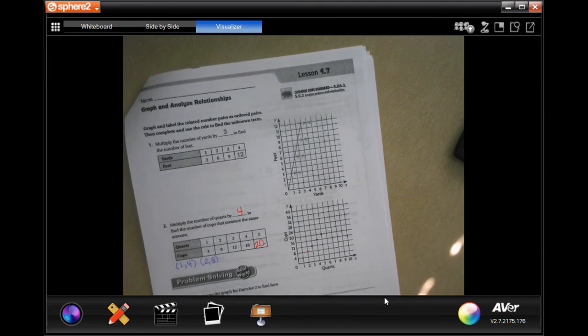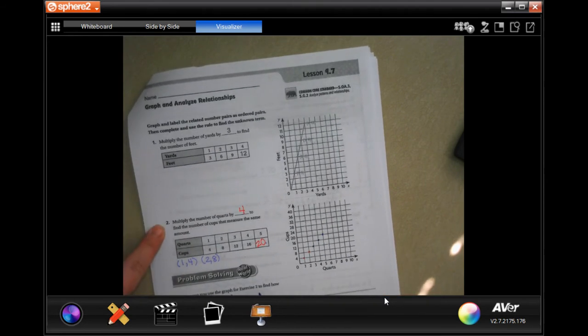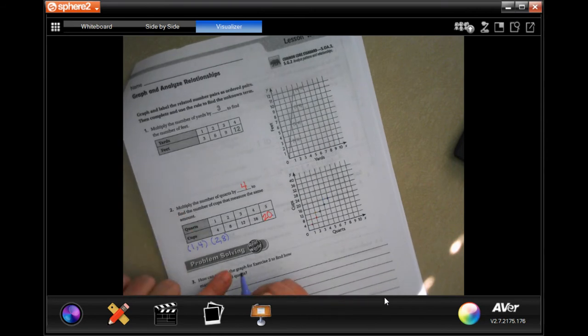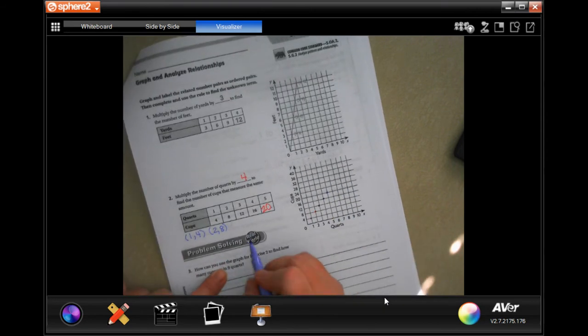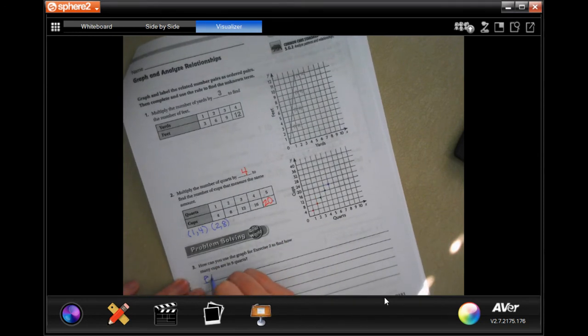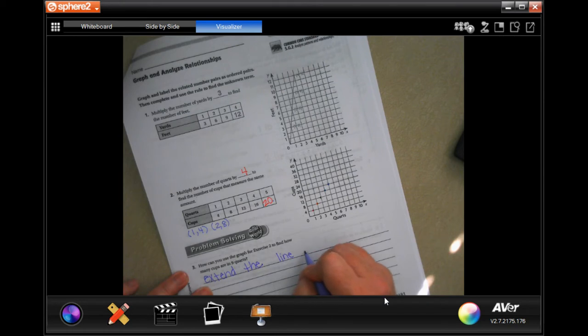Now it says, how can you use the graph for exercise two to find how many cups are in nine quarts? Well, we could follow the line and extend the line on the graph. It's not going to be take nine multiply it by four to get thirty-six - it's asking you to use the graph, so extend the line on the graph through nine.